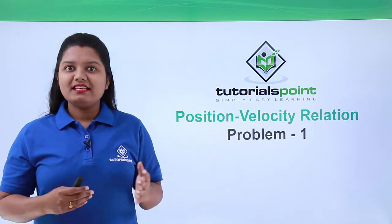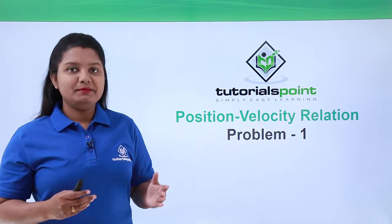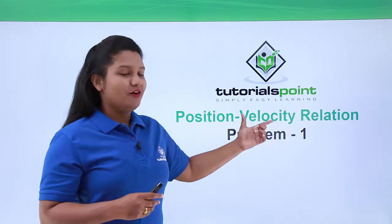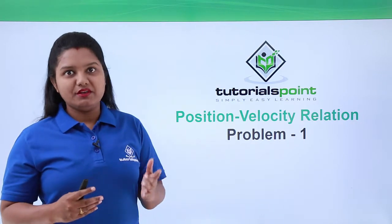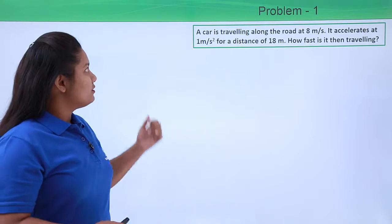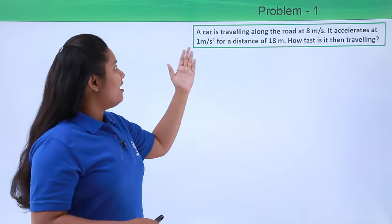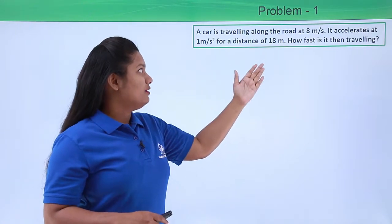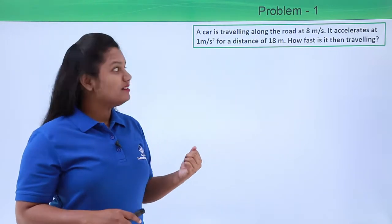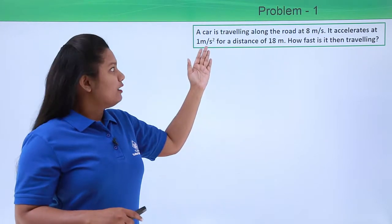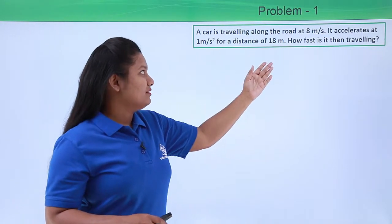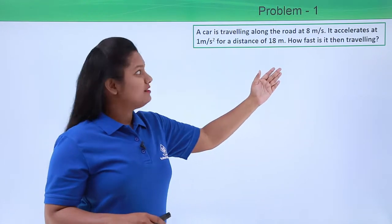Hello everyone, in this video we will be discussing a problem based on position-velocity relation, which is otherwise known as the third equation of motion. So here is the problem: a car is traveling along the road at 8 meters per second. It accelerates at 1 meter per second squared for a distance of 18 meters. How fast is it then traveling?